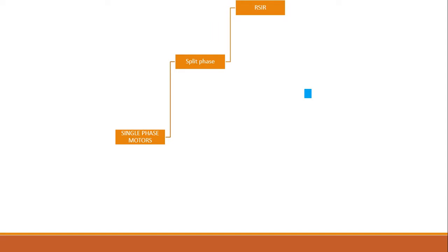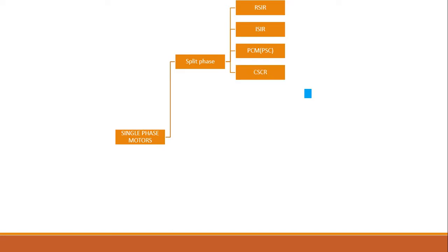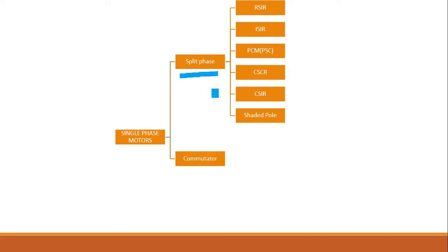In the split phase category, there is RSIR — Resistance Start Induction Run — CSIR — Induction Start Induction Run — PCM, which is Permanent Capacitor Motor, otherwise known as Permanent Split Capacitor Motor, CSCR — Capacitor Start Capacitor Run motor, CSIR — Capacitor Start Induction Run motor, and shaded pole motor. All these are types of split phase motors.